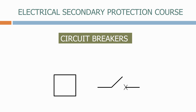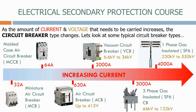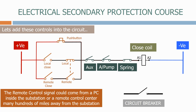Circuit breakers are a key element in the electrical network as they switch the electricity on and off and are there to disconnect any faults quickly when something goes wrong with the system. We will look at the different types of circuit breakers and see how the control circuits interact with the protection and control systems.